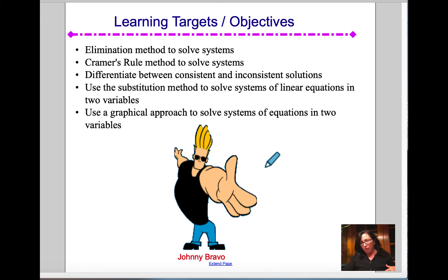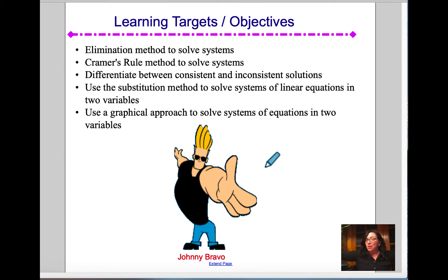This guy — Johnny Bravo — also one of my favorites. I like him in this picture because he's illustrating a line, like y equals something. Slope of zero, right?